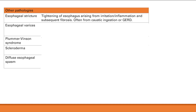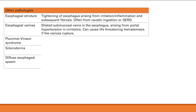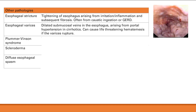Esophageal varices are dilated submucosal veins in the esophagus, arising from portal hypertension in cirrhotic patients. These abnormally dilated vessels are very fragile and can rupture. If they rupture, you get a lot of bleeding which can be life-threatening, presenting as hematemesis — vomiting of blood going out through your mouth.